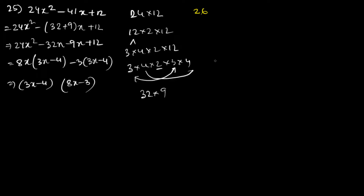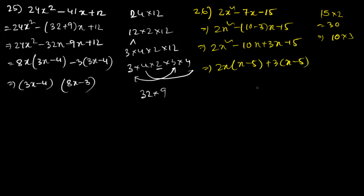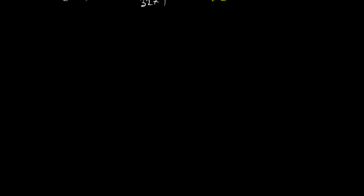Question 26 is given: 2x² minus 7x minus 15. So 15 times 2 is 30, and 10 times 3 is 30. So: 2x² minus 10x plus 3x minus 15. Taking 2x common gives (x minus 5), and taking 3 common gives (x minus 5). So the answer is (x minus 5)(2x plus 3). That was a little bit easy.